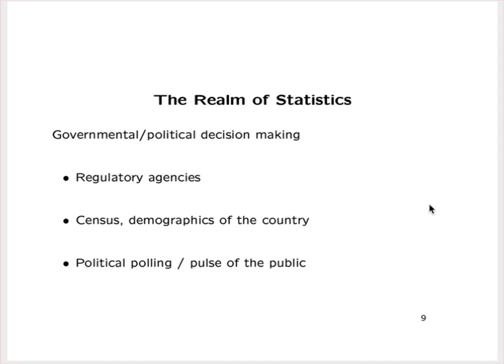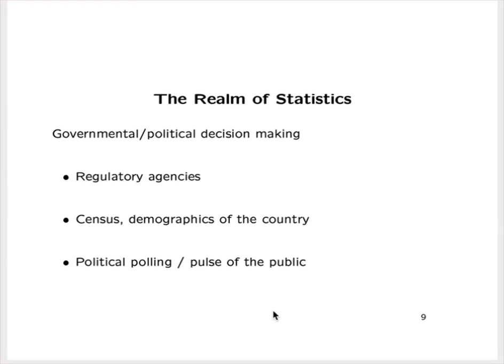Governmental and political decision-making is another domain. A variety of regulatory agencies utilize statistics — the USDA, the EPA, the CDC, and so forth. Statistics is used quite a bit in government, and also in political decision-making. Political polls appear constantly in the news and magazines, trying to get a feel for the pulse of the country. Polling agencies conduct polls and report them in the news, trying to inform the public — and sometimes probably trying to sway public opinion as well.